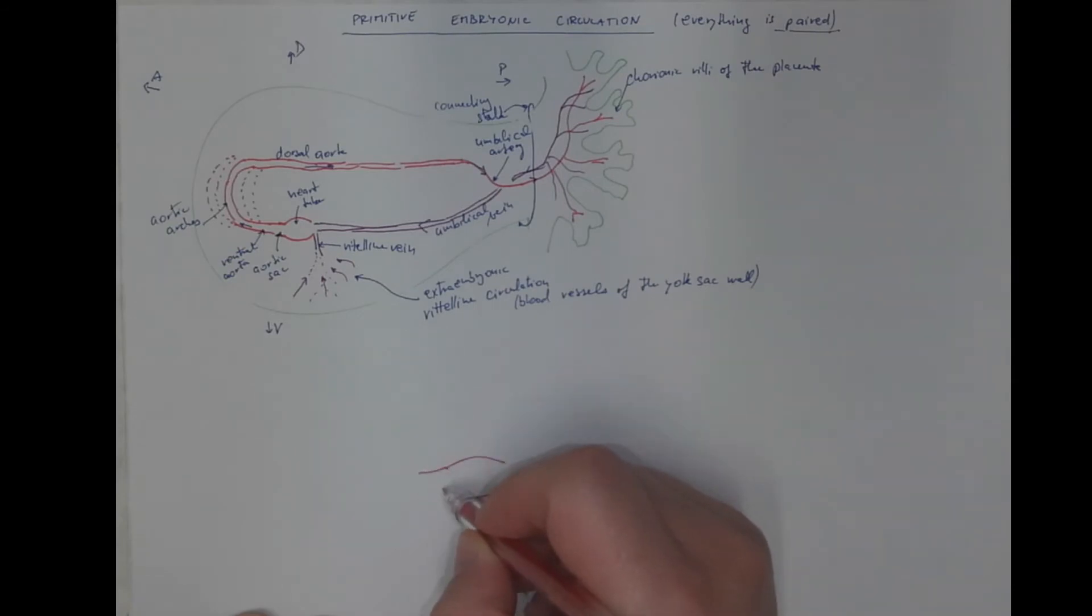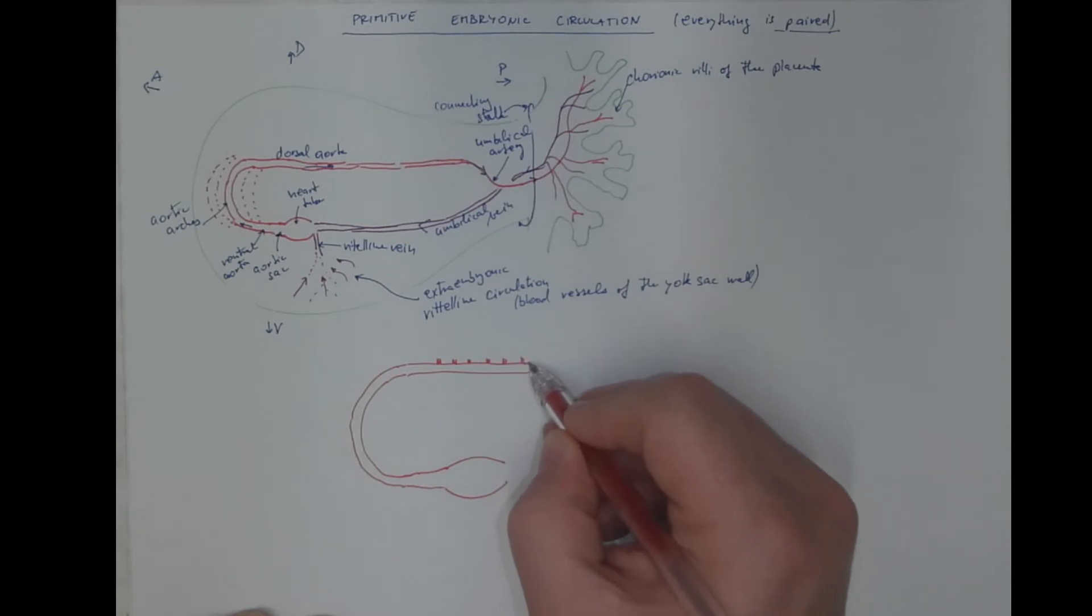The ventral aorta, the aortic arches. For the simplicity, I will only include one. Then we got the dorsal aorta. And the dorsal aorta gives rise to segmental branches that are providing blood supply to the region of the body segments, the somites.